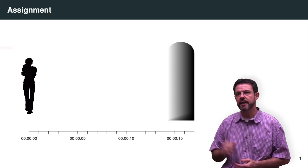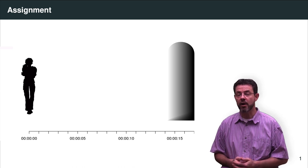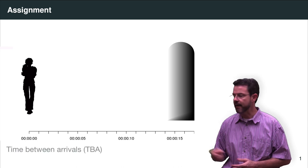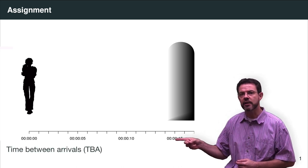There are two metrics that you need to keep track of and record. The first one is the time between arrivals, and at the bottom scale you will actually see that the time is indicated to you in seconds.